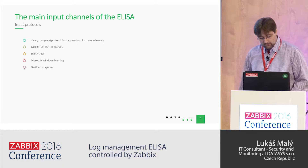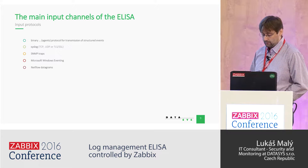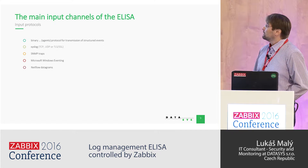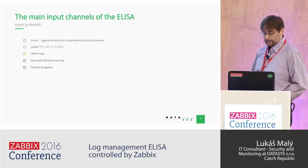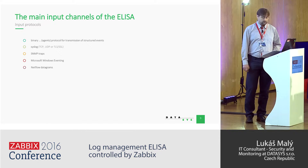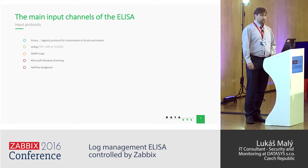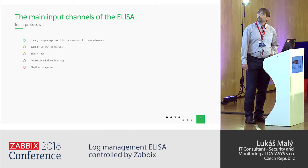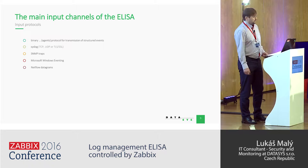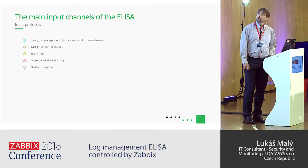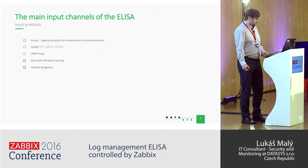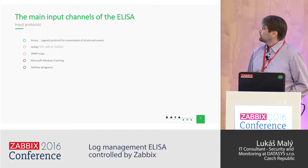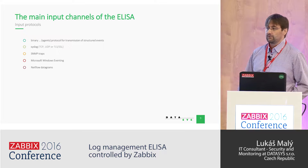Let's have a look at the main input channels of ELISA. The primary input is binary and is used with the NXLog agent. Another input protocol is syslog — this is an older protocol where it is possible to use TCP or UDP. It is also possible to encrypt communication via syslog. Other input channels are SNMP traps. A very important input is also Microsoft Windows Eventing. It is also possible to send NetFlow datagrams into ELISA.